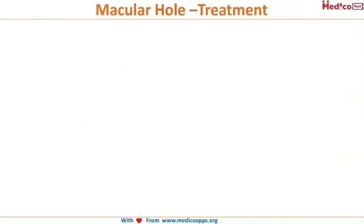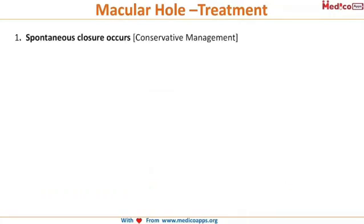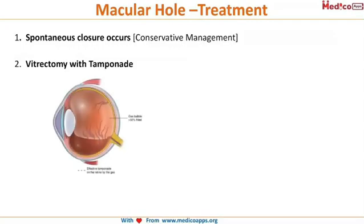Treatment of macular hole begins with conservative management, where spontaneous closure may occur. If that doesn't occur, a vitrectomy with tamponade is performed. The tamponade uses a gas bubble to compress the retina back into place.